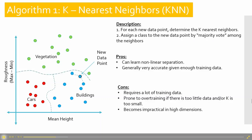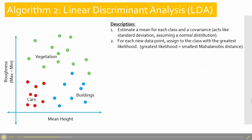K-nearest neighbor gives you a nice decision boundary between your data to classify things, and it classifies them pretty well. One issue is that you need a lot of training data. The next algorithm is linear discriminant analysis.